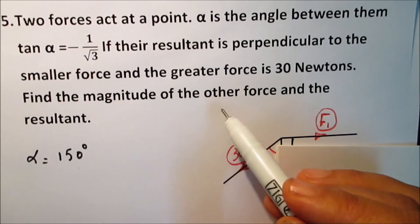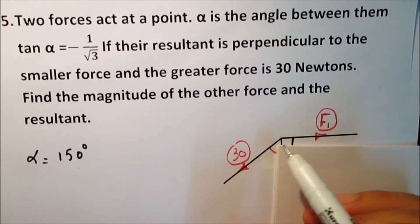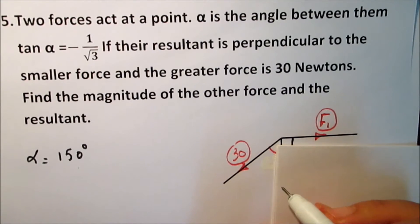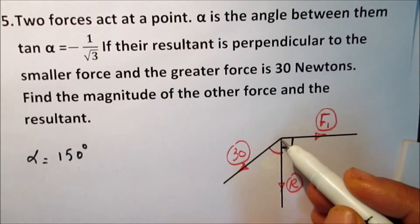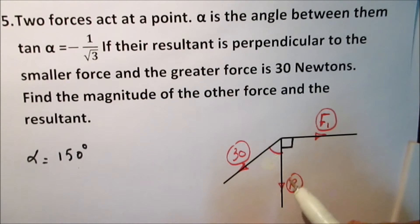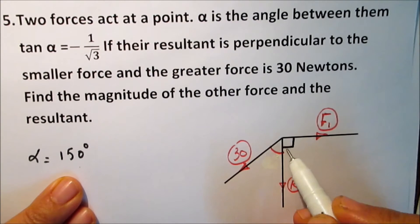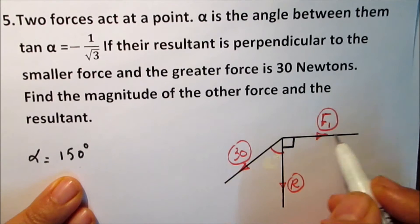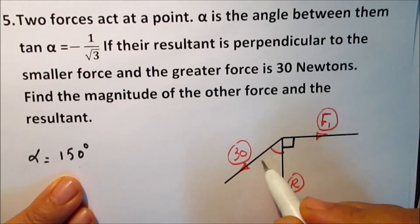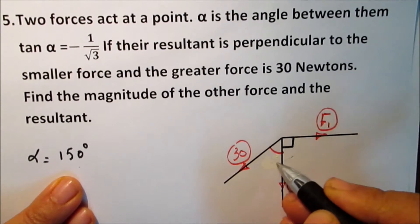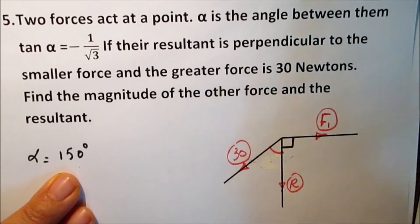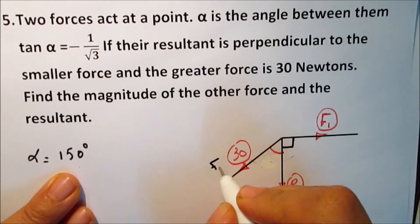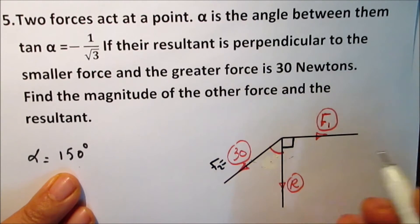We want to find F1 and the resultant, where the resultant is perpendicular to the smaller force F1. Draw a perpendicular to F1 that represents the resultant — this is a right angle. The angle alpha between the two forces is 150 degrees. F2 is 30 N, the greater force.